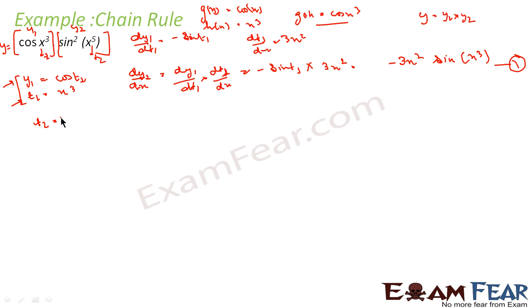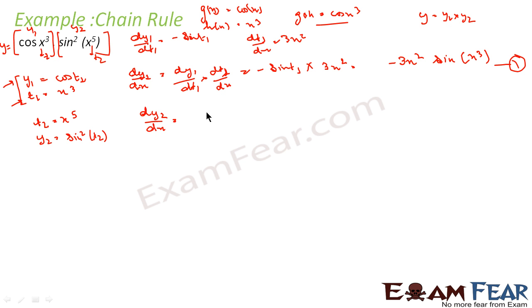I define t2 = x⁵, and y2 = sin²(t2). I have to find dy2/dx. By the chain rule for composite functions, this is nothing but dy2/dt2 · dt2/dx.